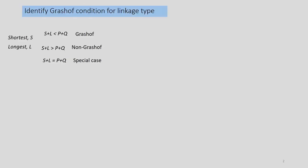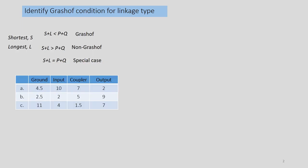The Grashof condition is a very simple relationship that predicts the rotation behavior or rotatability of a four-bar linkage and its inversions based on only the link lengths. Let's consider that S is the shortest length, L is the longest length, and P and Q are the rest of the lengths. The linkage is Grashof if S plus L is less than P plus Q; otherwise it is non-Grashof. In the case of equality, it is a special-case Grashof. If all the information is given in a table, we can easily find the S plus L and P plus Q relationship.